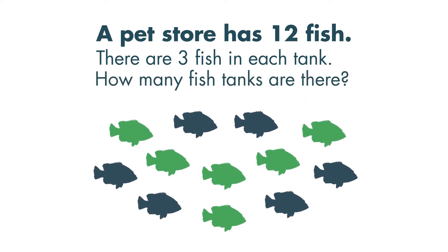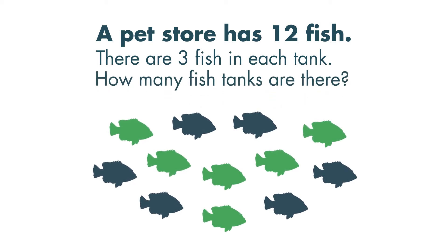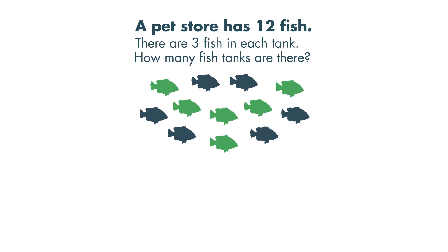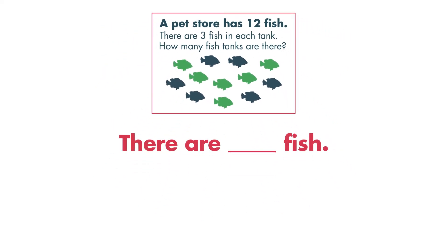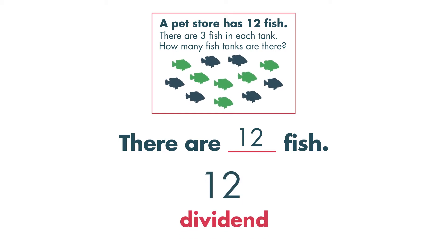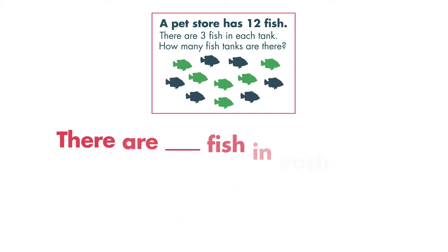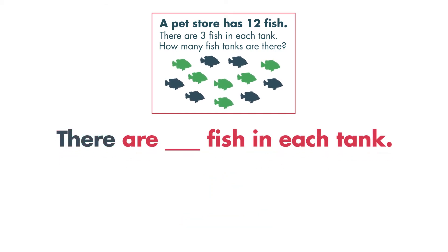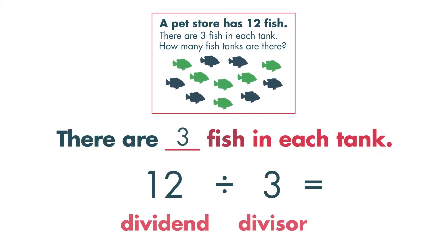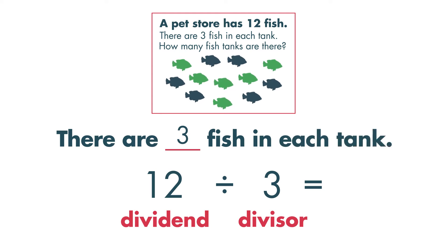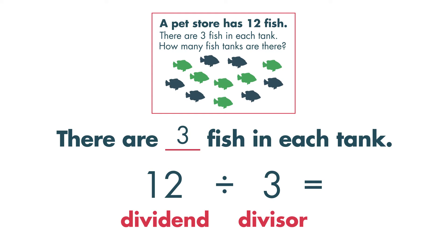We can solve this problem using division. How many fish are there? There are 12 fish. 12 is the dividend — this is the number we will divide. How many fish are in each tank? There are 3 fish in each tank. 3 is the divisor — this is the number we will divide 12 by.